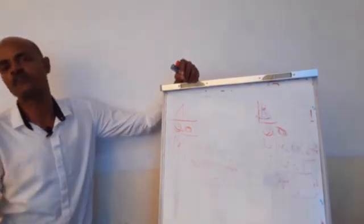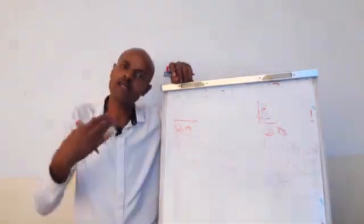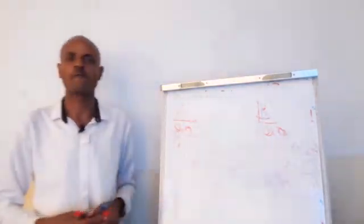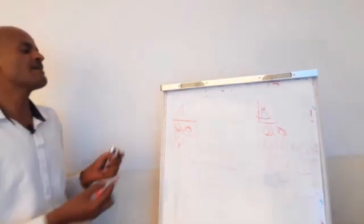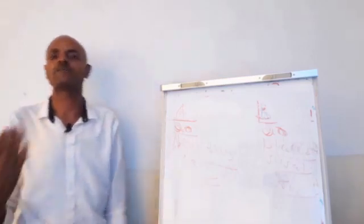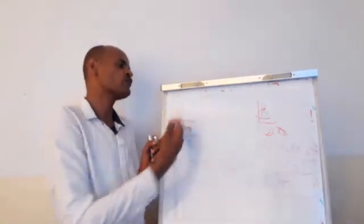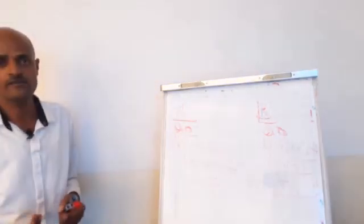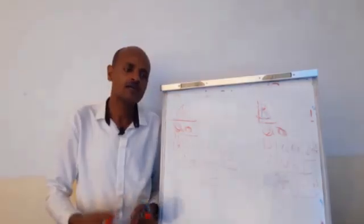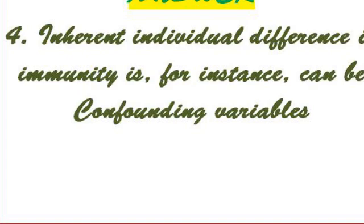What is the confounding variable? Confounding factors are those which can affect the outcome of an experiment but cannot be regulated by the experimenter. In this case, the immune system of the people is the confounding variable, since the researcher cannot control the immune system of each individual.